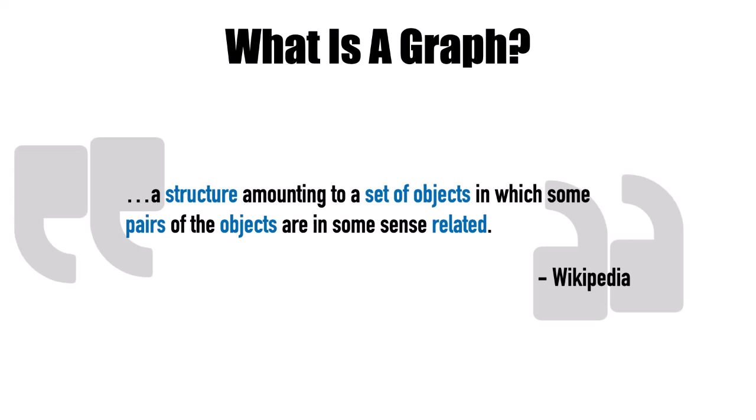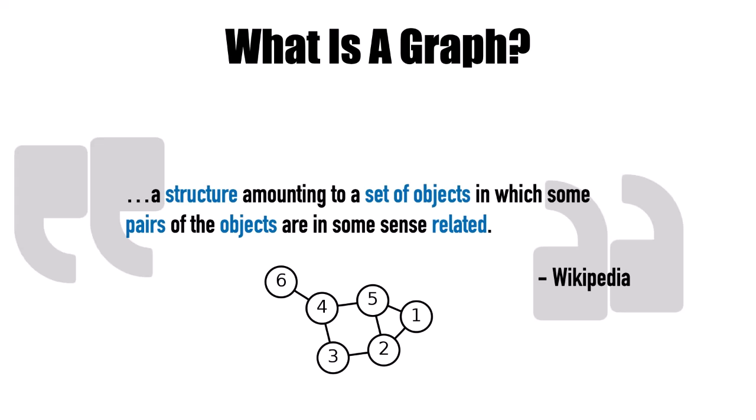Today we're going to talk about graphs. First I thought it would be beneficial to describe what a graph is. According to Wikipedia, a graph is a structure amounting to a set of objects in which some pairs of the objects are in some sense related. This is easiest displayed through an image — we have numbers representing vertices and lines connecting them as edges, showing how you can traverse from one node in the graph to another.